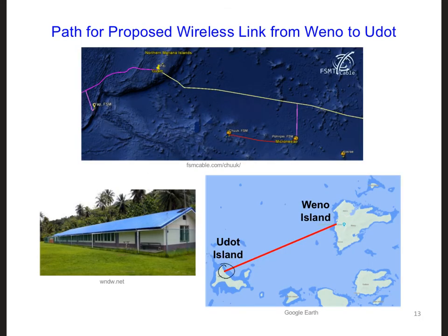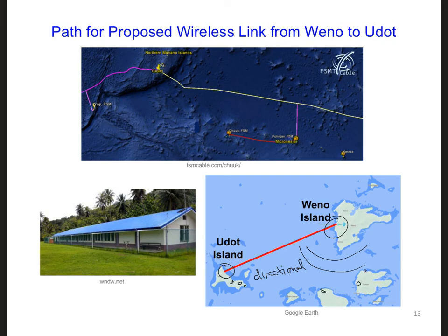At UDOT school, it makes sense to have a directional antenna. We know exactly where the closest internet access point is, and we want to communicate only in that direction. But on Wayno Island, the choice of antenna depends on whether we want to connect other locations to the internet as well. If there are going to be other users in different locations, like on these islands or on other houses or buildings on UDOT Island, we might want an omnidirectional antenna, as long as it could radiate enough power so that it would still be strong enough to be received at these various locations.